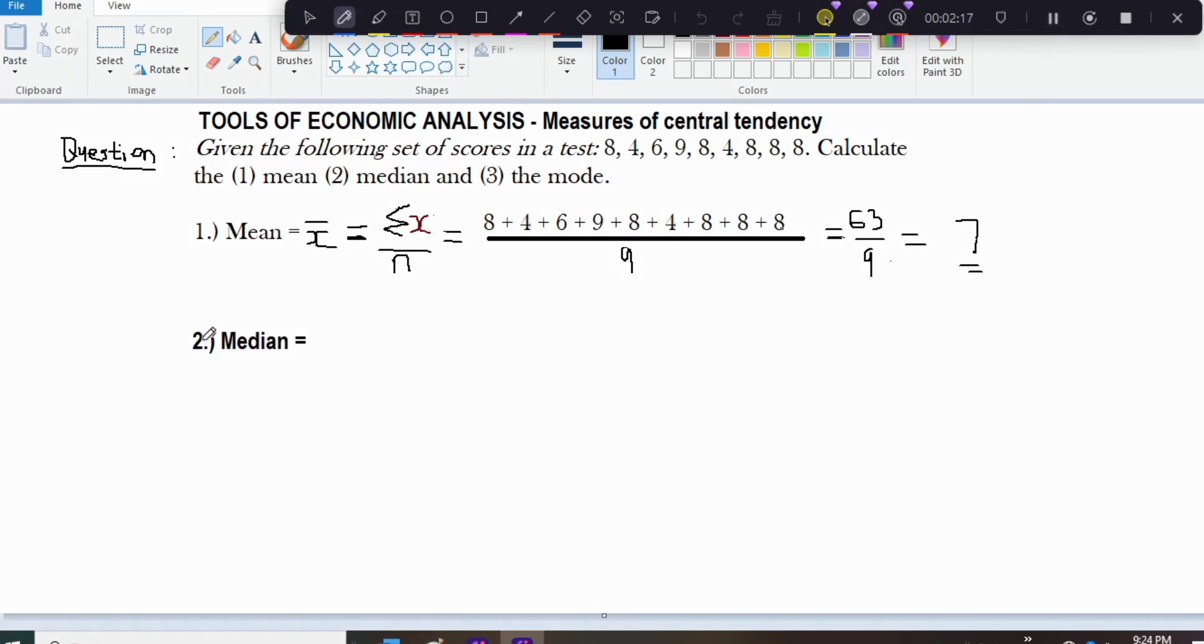Now we want to calculate the median, which is the second question. The median is the middle number of the scores or test values when arranged either from the smallest to the biggest number or value. That is from ascending order or descending order. So let us look at the items.